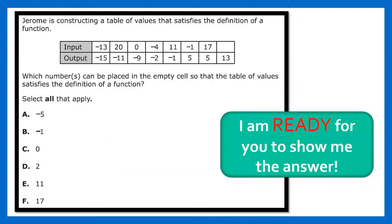This next question you may need to pause the screen — it's a question you could see on your EOC. Jerome is constructing a table of values that satisfies the definition of a function. Which number can be placed in the empty cell so that the table of values satisfies the definition of a function? Go ahead and pause the video, grab some scratch paper, see if you can figure out the answer — select all that apply. When you are ready, click the button that says 'I am ready for you to show me the answer.'